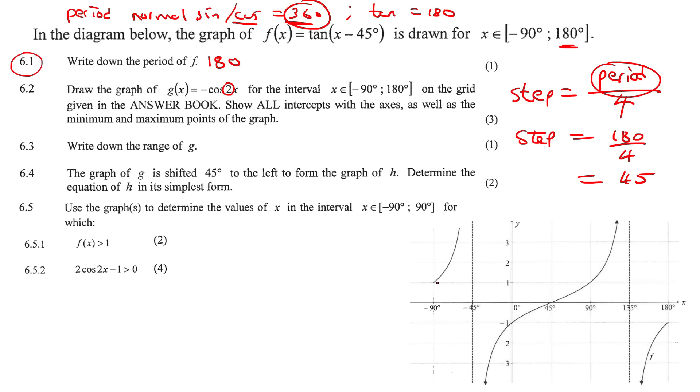So now we're just going to go plot those points. So the first one was minus 90 and 1, which is over there. Then we got a minus 45 and 0. So that's there. 0 and minus 1. 45 and 0. 90 and 1. 135 and 0. And then 180 and minus 1. So we can just go draw like that.